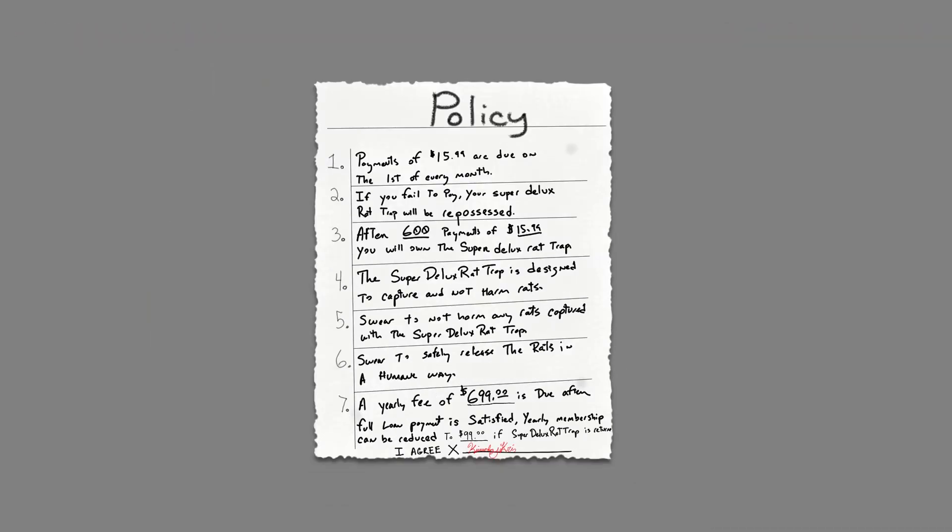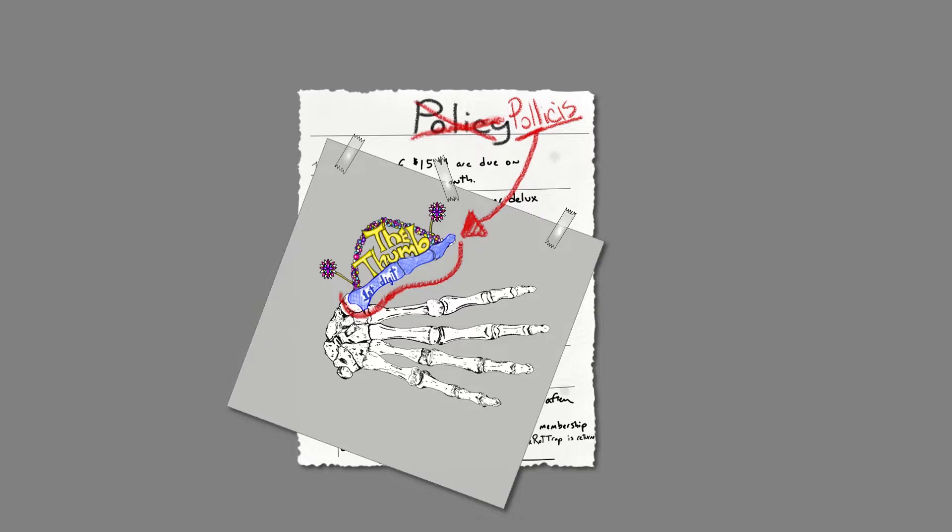Let's begin. First, we will review the pollicis muscle. 'Pollicis' is Latin for pollux, which means the thumb — your first digit. So just remember: you read the policies first, you'll remember it's the first digit, the thumb.